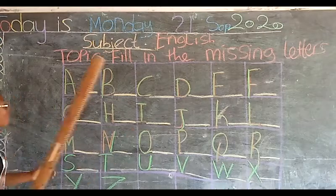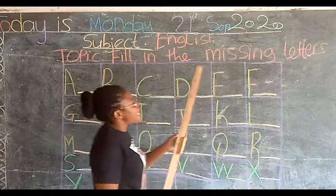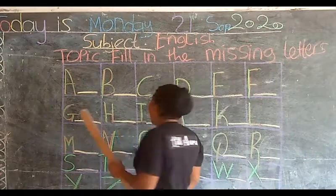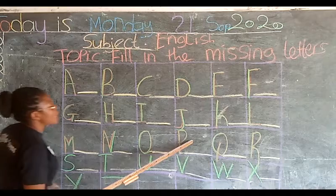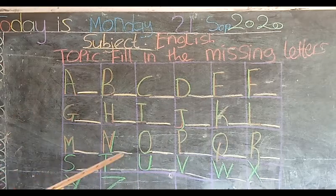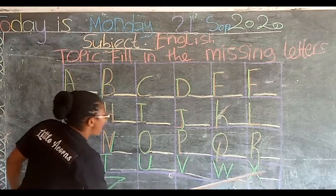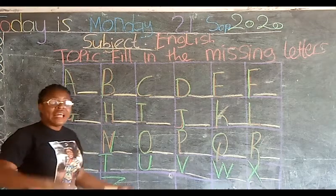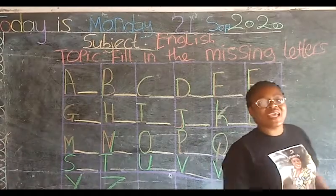The alphabet song: A, B, C, D, E, F, G, H, I, J, K, L, M, N, O, P, Q, R, S, T, U, V, W, X, Y, and Z. Now I know my A, B, C.